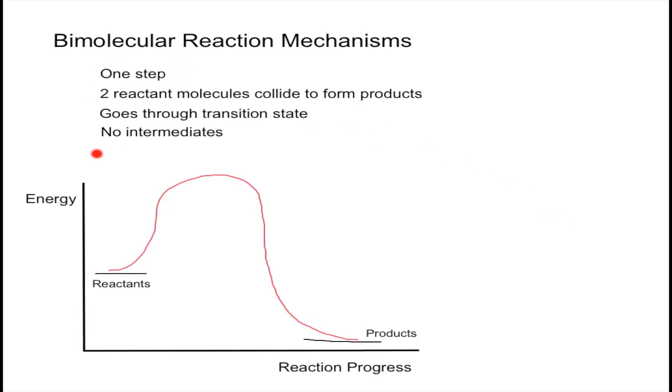So in here, we have an energy profile graph for this type of mechanism. And by understanding this, you can recognize them very easily. So in this coordinate, we have energy, and this coordinate, the reaction progress. So from left to right, the reaction is going through, so it's pretty much time.